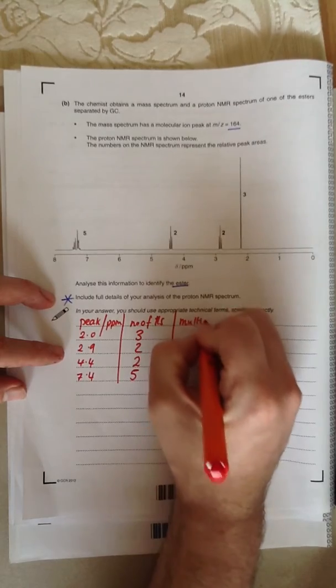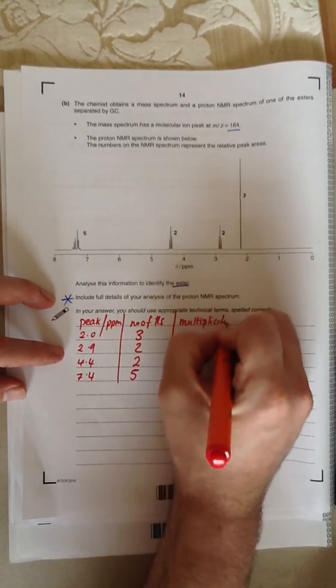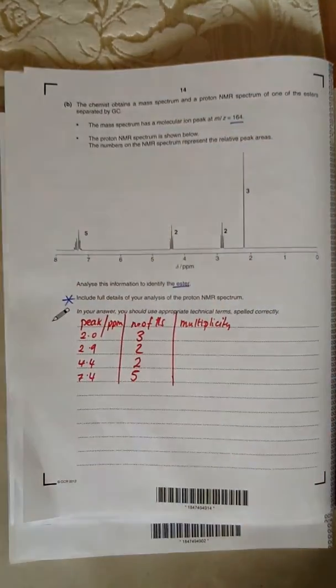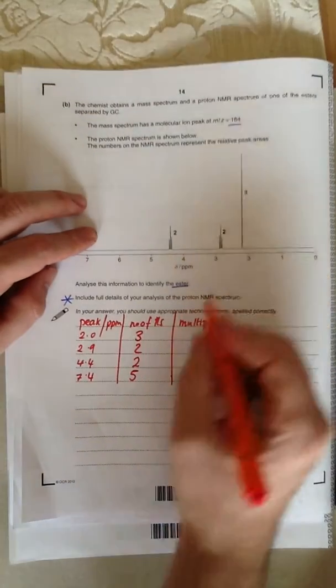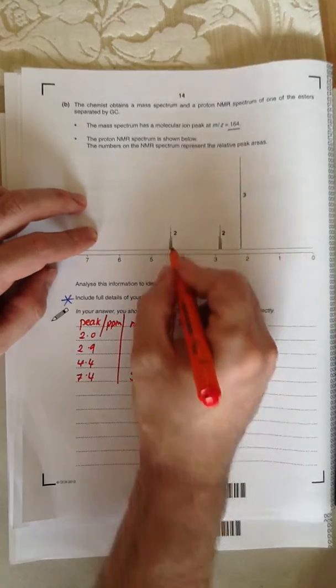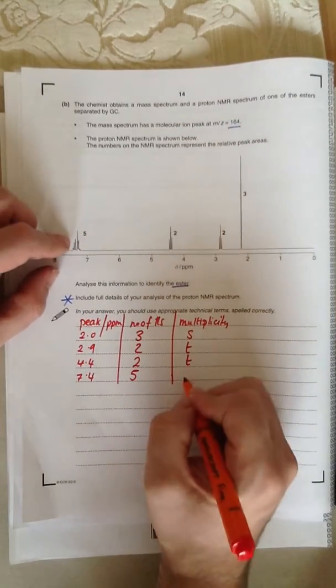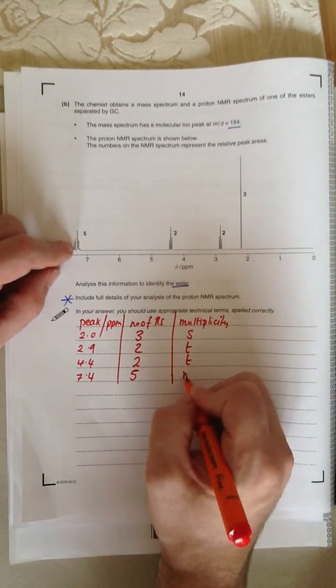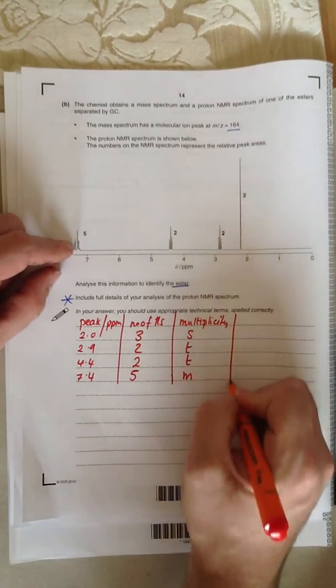Multiplicity. So how many lines are there? That peak is a singlet. That peak is a triplet. That peak is a triplet. That is a mess. It's a multiplet.